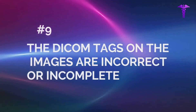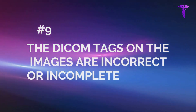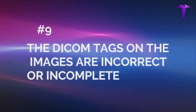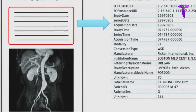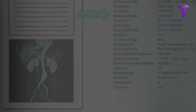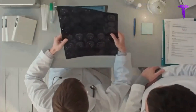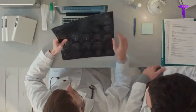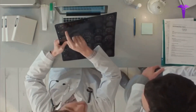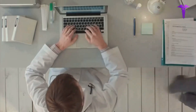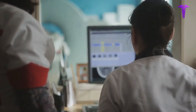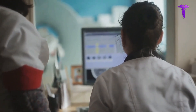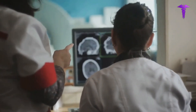Reason 9: The DICOM tags on the images are incorrect or incomplete. It is possible the metadata on the DICOM tags for this particular study could be invalid. Perhaps there was a change to the original order on RIS, which led to invalid data being written onto the DICOM tags. You'd have to run the images through a DICOM validator to confirm, or find this from the error logs on the PACS.